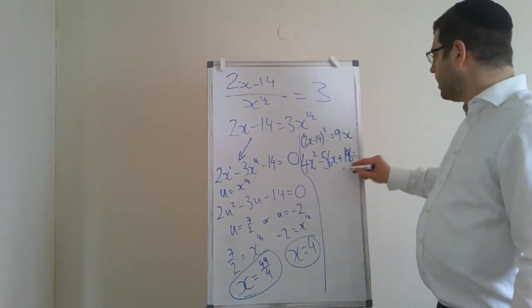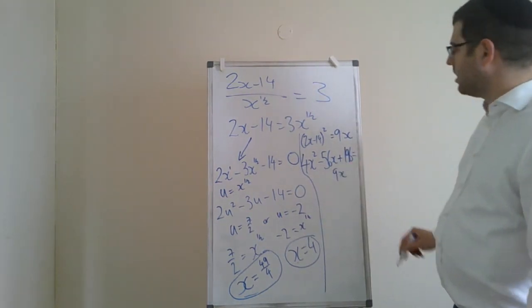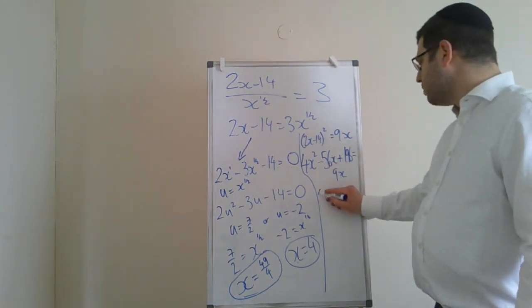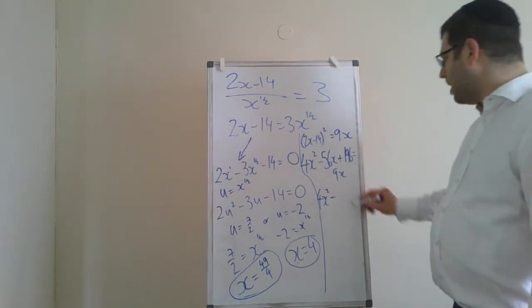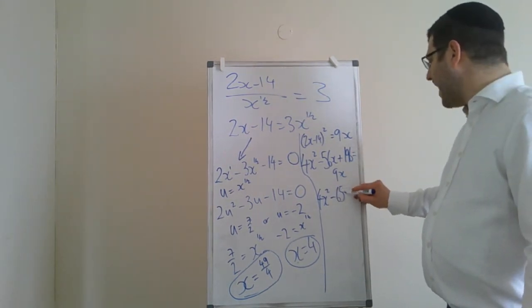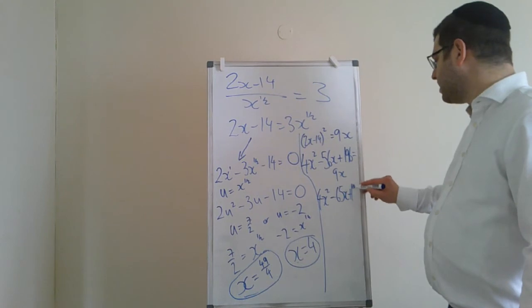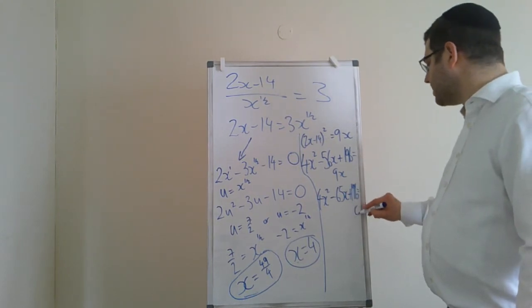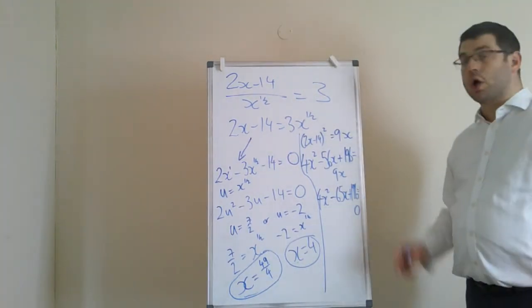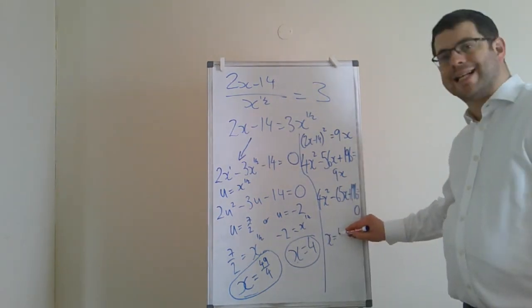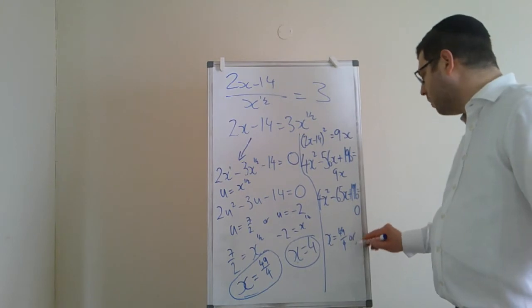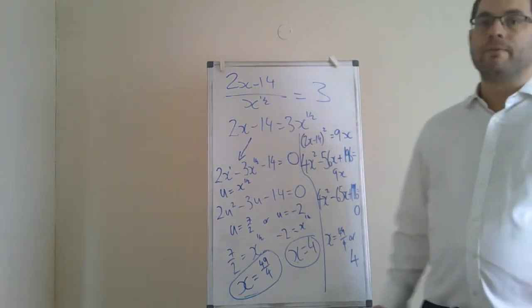This is equal to 9x. Bring the 9x across, and you get 4x squared minus 65x plus 196 is equal to 0. Now solve that quadratic. And if you solve it, you get exactly the same answers: 49 over 4 or 4.